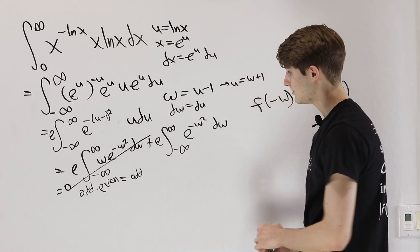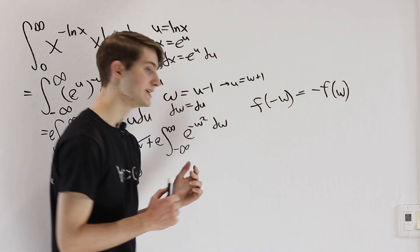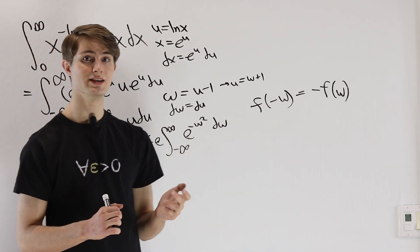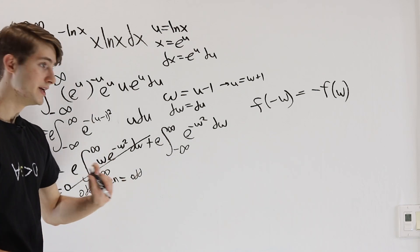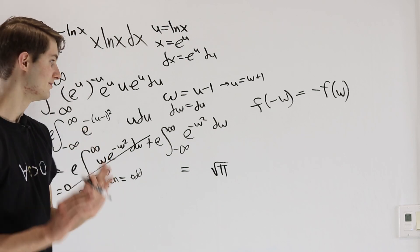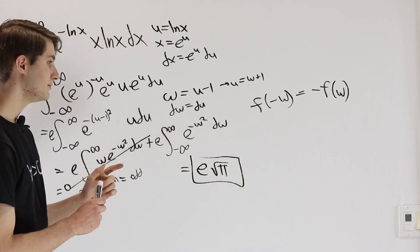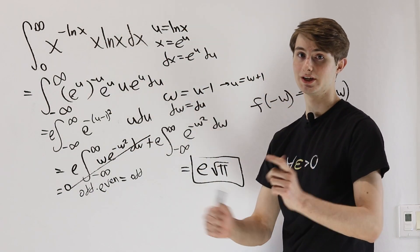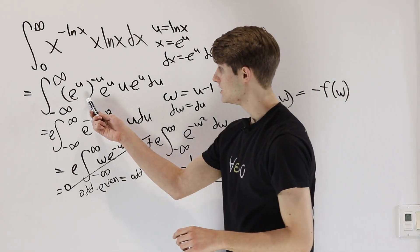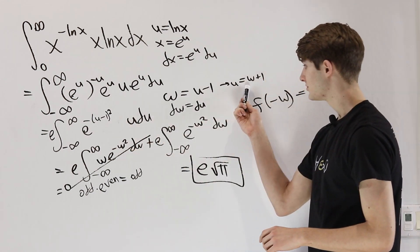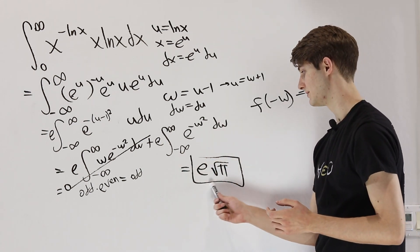All that's left is the integral of e to the negative w squared dw — the famous Gaussian integral, which pops up a lot in normal distributions in statistics. I'll link a video in the description explaining why, but its value is the square root of pi. So our final result is e times the square root of pi. To summarize: we saw x and natural log x, substituted u equals natural log x, completed the square on the exponent, did a simple substitution, and split the integral. The odd function integral is 0, leaving us with the Gaussian integral, giving e times the square root of pi.